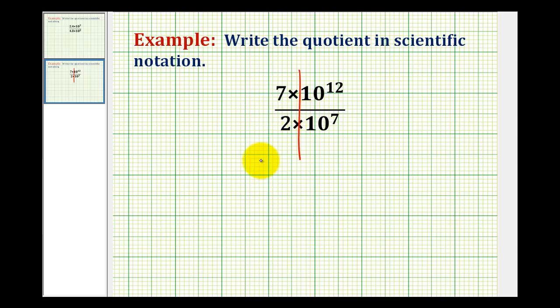So this is equivalent to seven divided by two times ten to the twelfth divided by ten to the seventh. Now we'll determine this quotient and then we'll determine this quotient.